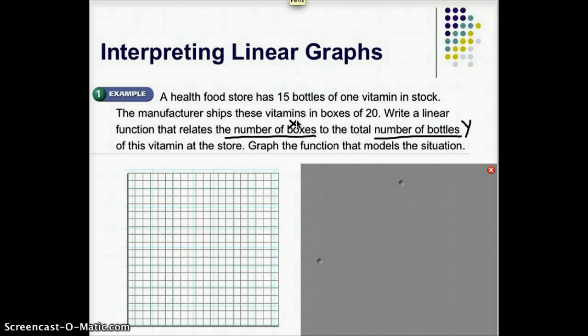And so, you should have already tried this and see if you come up with mine. It looks like Y, my number of bottles, it equals, we already had 15 at the beginning, so 15 plus 20 times the number of boxes. Y equals 15 plus 20X, or Y equals 20X plus 15 is a good equation.